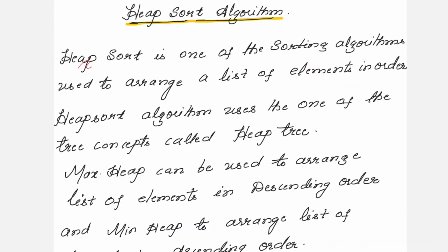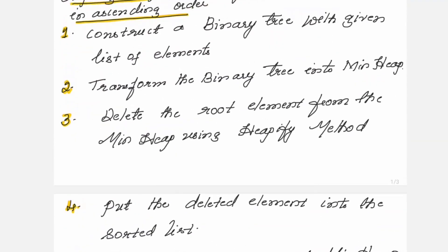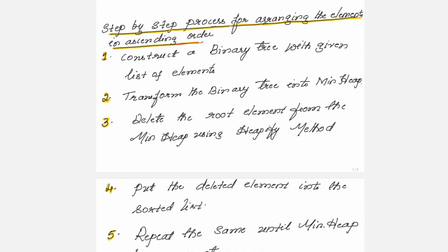The elements have been sorted. Heap sort is a sorting algorithm used to arrange a list of elements in order using the tree concept — specifically the heap tree. You can create a max heap to arrange elements in descending order, or a min heap to arrange elements in ascending order. Here are the step-by-step processes for arranging elements in ascending order, the same steps carried out in the example.